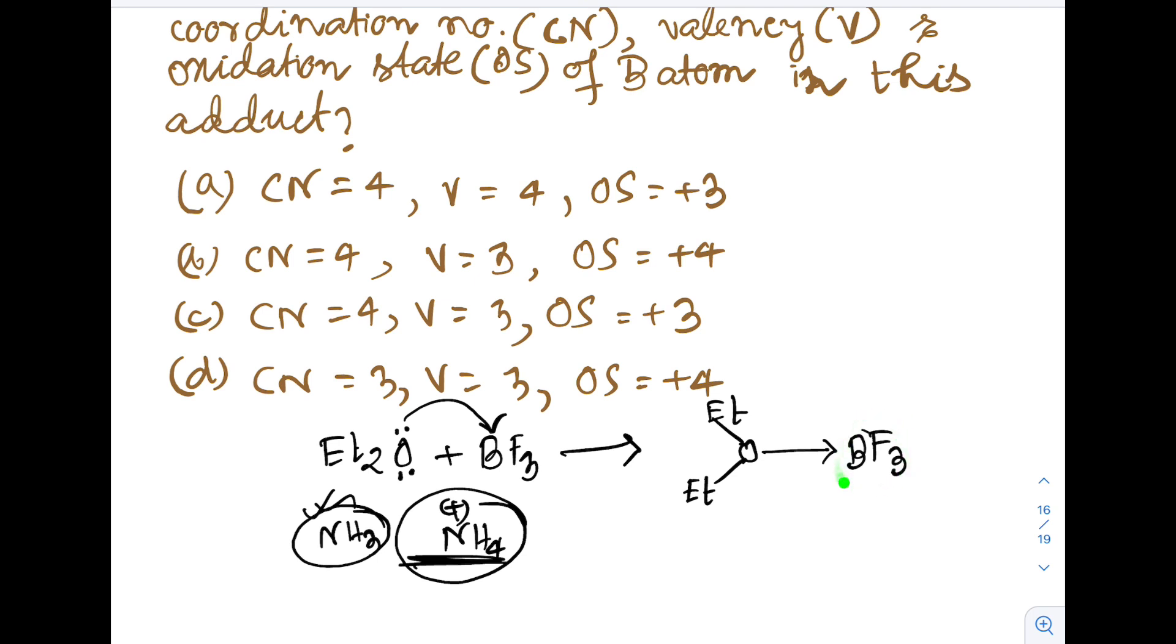Same thing happens here. In BF3, three covalent bonds for three fluorine atoms are there, so for three fluorine minus three, boron gets plus three. But as oxygen is forming a dative bond, it will not contribute to the oxidation number of boron. So plus three will be the answer. Option A is correct.